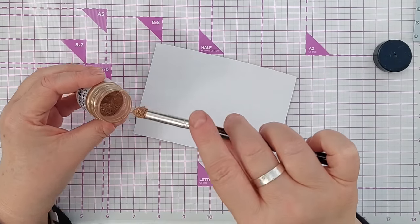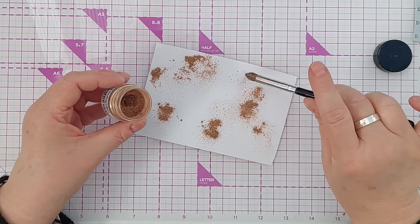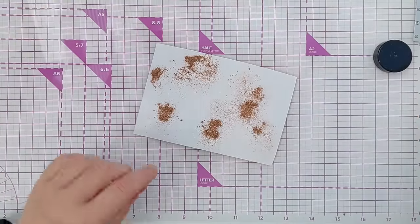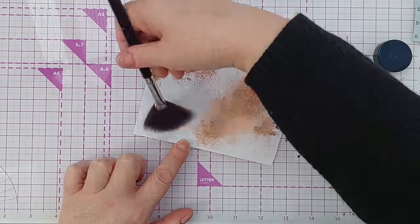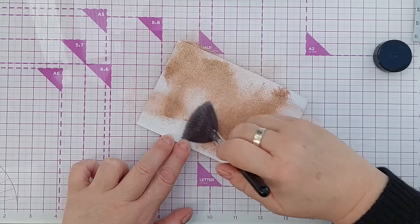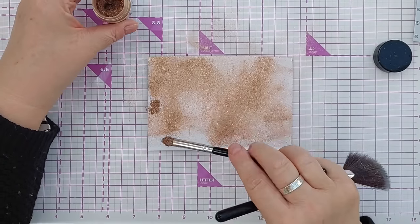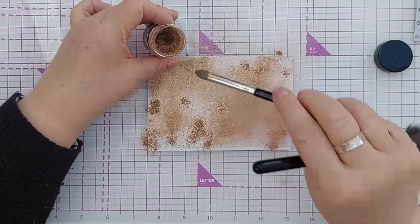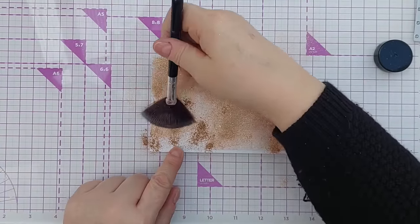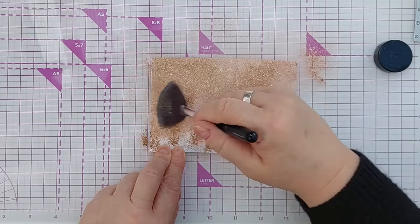I shall drop a load onto the sticky side of my piece of paper, take my fan brush and brush it around all over the sticky and I'll just keep adding until my sticky is no longer sticky.